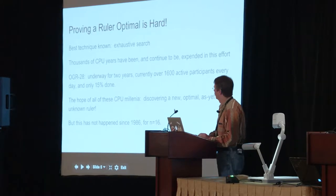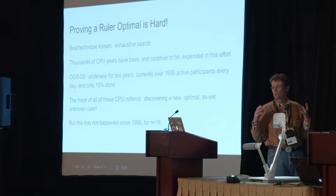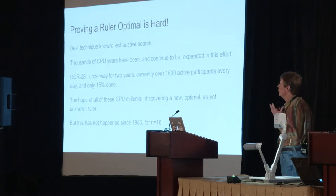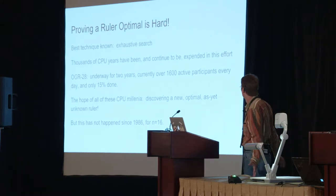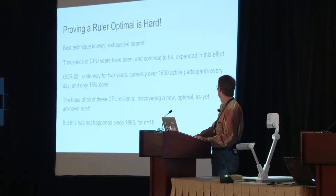The interesting thing about this is people have been looking at it for decades, and we haven't been able to come up with a better way to prove a ruler is optimal other than simply trying all the possibilities. We've burned thousands of CPU years on this. Right now we're looking at OGR-28 — we're hoping to find some ruler that's shorter than any that's known. This has not happened for all these decades of computation, since back in 1986 when someone found a new ruler for 16 marks.